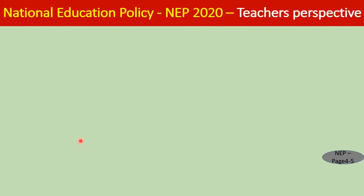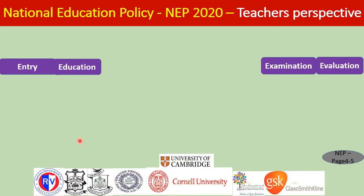In this video on National Education Policy NEP 2020 from a teacher's perspective, four aspects are considered: entry of the student into the education system, what education will be given, how evaluation is made, and what examination patterns are introduced so that the knowledge base and skills of students are assessed.